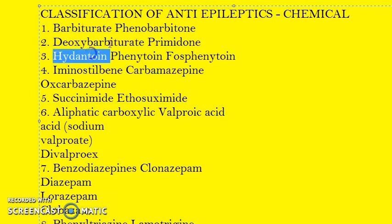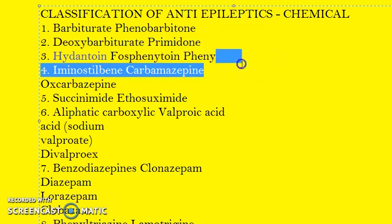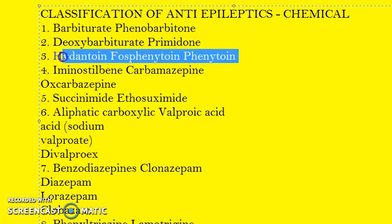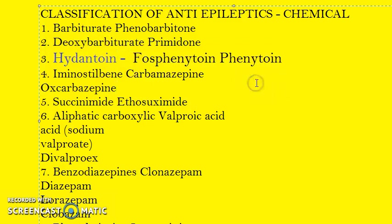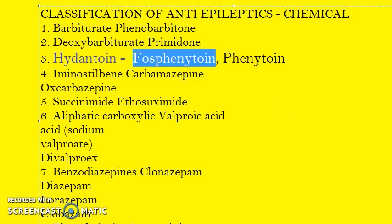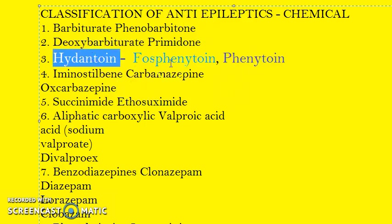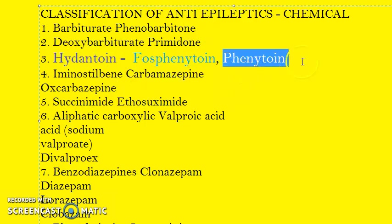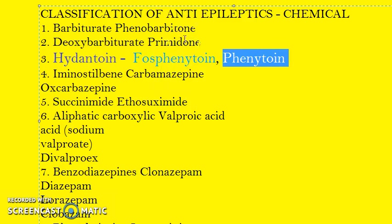Here you can see hydantoin — this is going to be very important. The example is fosphenytoin. Fosphenytoin is water soluble; it will convert to phenytoin after you take it. So hydantoin examples are fosphenytoin and phenytoin. You need to know phenytoin because phenytoin is the prototype for this group.